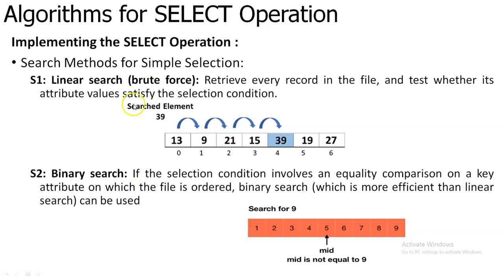The first one is by using the linear search algorithm. Here you will be having a search element — in this example, 39 is your search element — and this is the list of data you are going to have in your database. In linear search, the search will be starting from the 0th index and sequentially it will be moved to the next index, searching for the search element. Once the element has been matched with the data, it will indicate whether your data is present or not. This is how linear search works.